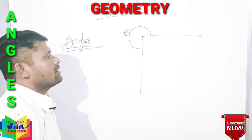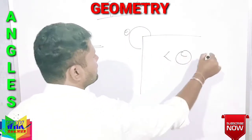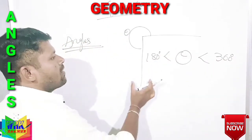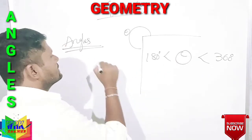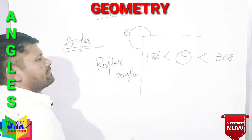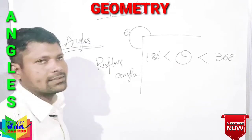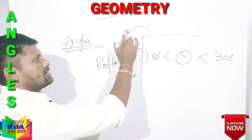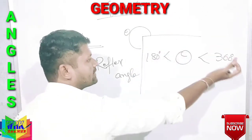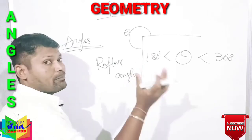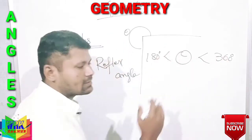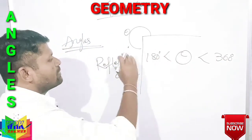If theta lies between 180 and 360 degrees — that is, above 180 and below 360 — then it is said to be a reflex angle.